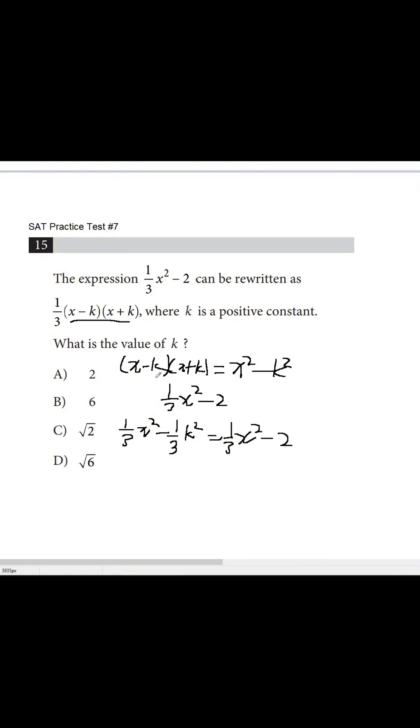We're just writing it down, copying it down. And then we just simplify. We have 1/3 k squared equals 2. And then we just simplify this.